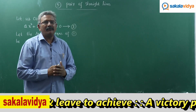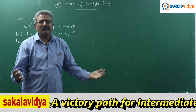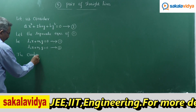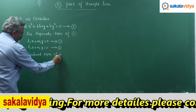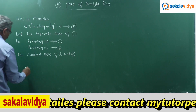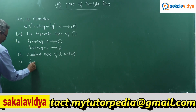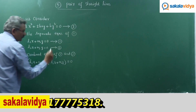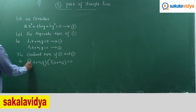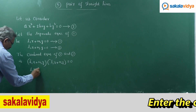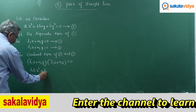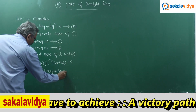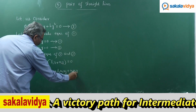So, let us find out the combined equation of 1 and 2, which represents Ax² + 2hxy + by² = 0. The combined equation of 1 and 2 is (L1x + m1y)(L2x + m2y) = 0. Expanding directly, we get L1L2x² + L1m2xy + L2m1xy + m1m2y² = 0.